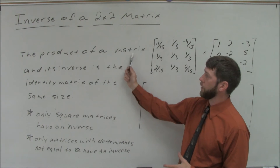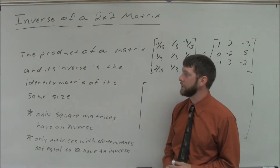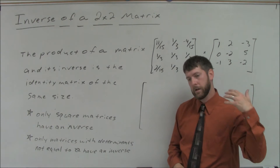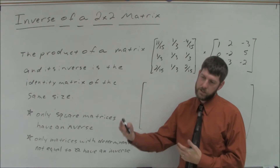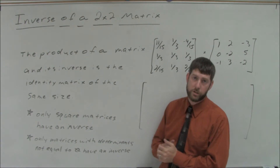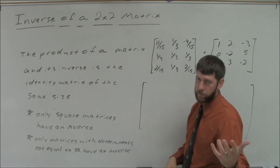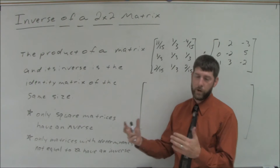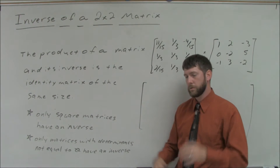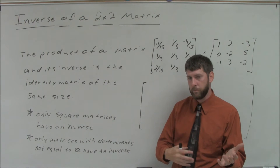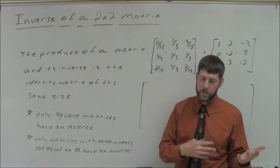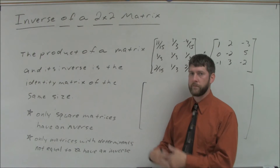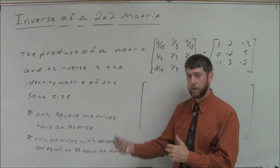What is an inverse? The product of a matrix and its inverse is the identity matrix of the same size. So if I have a 2x2 matrix times its inverse, which is also 2x2, we'll get the 2x2 identity. An inverse matrix is like a multiplicative inverse for regular numbers — 2 times 1/2 is 1, because 1/2 is the multiplicative inverse of 2. The product of a number and its inverse gives you the identity.